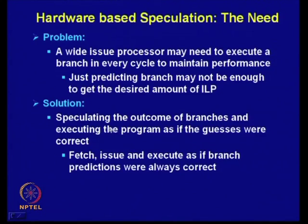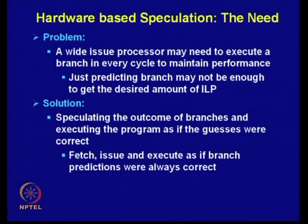The solution is speculating the outcome of branches and executing the program as if the guesses were correct. Earlier, executions were not performed at the boundaries of control dependences — until control dependences were resolved, subsequent instructions were not executed. But now we go a step further: execution continues in the speculated direction, assuming speculation is correct, performing fetch, issue, and execute as if branch predictions were always correct.